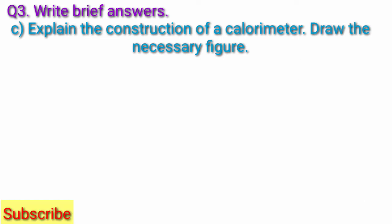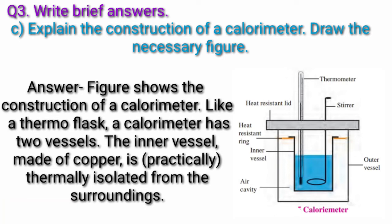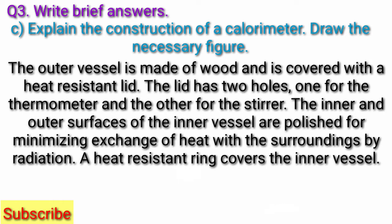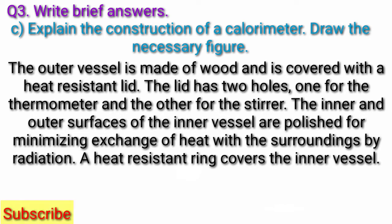Question 3C: Explain the construction of a calorimeter. Like a thermal flask, a calorimeter has two vessels. The inner vessel made of copper is thermally isolated from the surroundings. The outer vessel is made of wood and is covered with a heat-resistant lid. The lid has two holes, one for the thermometer and the other for the stirrer. The inner and outer surfaces of the inner vessel are polished to minimize exchange of heat with the surroundings by radiation. A heat-resistant ring covers the inner vessel.